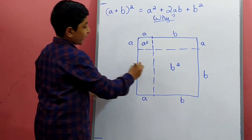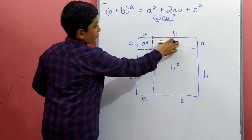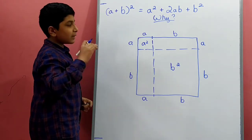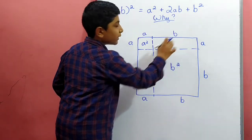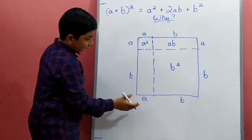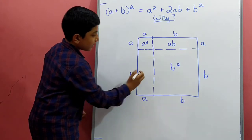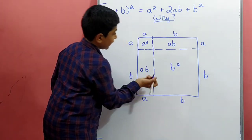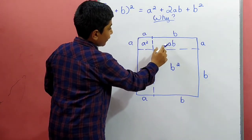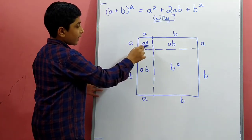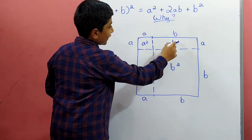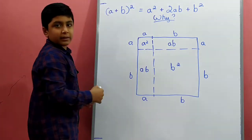And then we have two rectangles. To find the area of a rectangle, it is length into breadth. Here that is a into b, so the area is ab. And the other rectangle also has sides a and b, so its area is also ab.